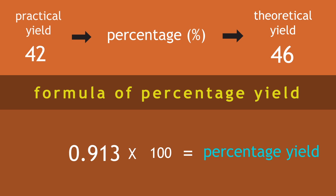Multiplied by 100, 91.3%. It can now be clearly seen that in this reaction we only produce 91.3% of what was expected.